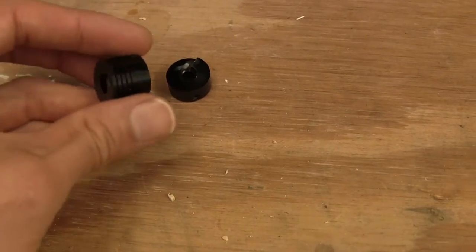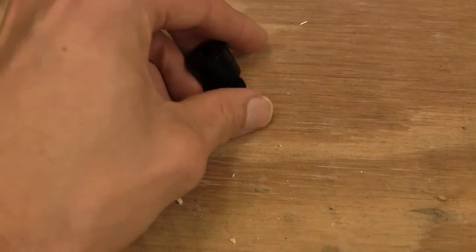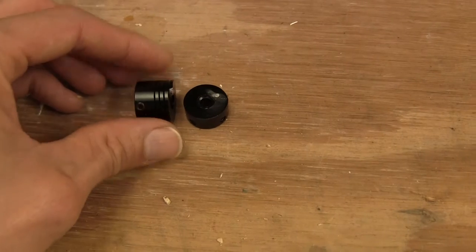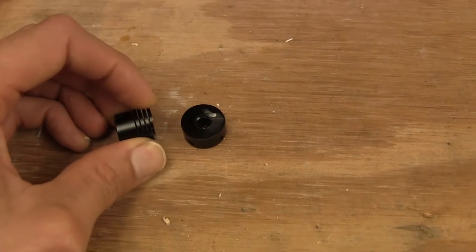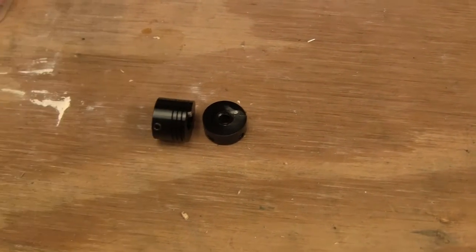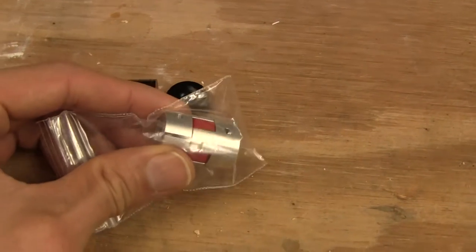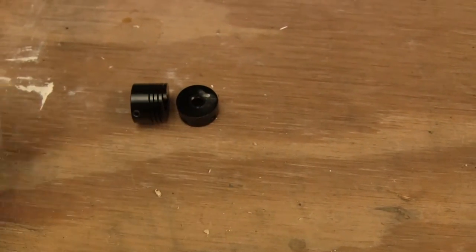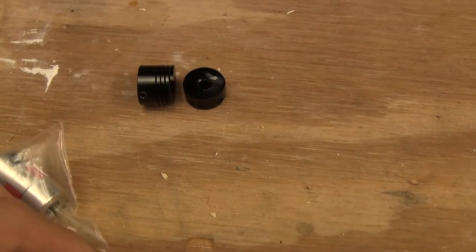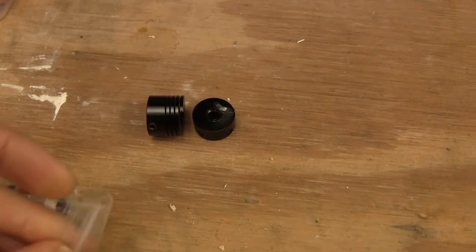I noticed on the Zortrax website that in the replacement procedure they had two types. They had this spring type of coupler, and they had the spider type coupler. It looked like they were using the spider type coupler on the newer printers, newer versions.